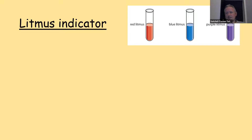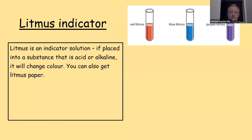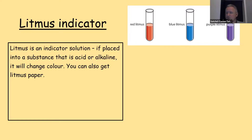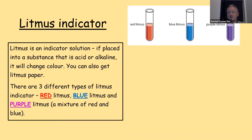The first indicator we're going to look at is litmus indicator — it's the classic one for Key Stage 3 science. Litmus is an indicator solution. If you put a couple of drops into a substance that is an acid or an alkaline, it'll change colour. You can also get litmus paper in the same colours: red litmus, blue litmus, and purple litmus paper. There are three different types of litmus: red litmus, blue litmus, and purple litmus, which is a mixture of both red and blue.